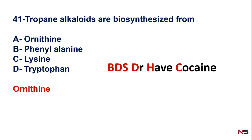For studying tropane alkaloids, we already covered a short trick: 'VDS doctor have cocaine.' V stands for belladonna, D for datura, S for stramonium, D for Duboisia, H for hyoscyamus, and C for coca. So VDS doctor have cocaine — those are the tropane alkaloids.